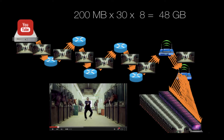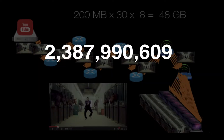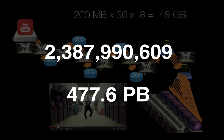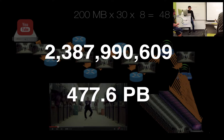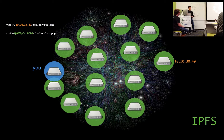For a video like Gangnam Style, which has over 2 billion views, that gets very costly — it comes out to roughly almost 500 petabytes of data being transmitted. And just think about it: if we were all in this room and some people had the video ready, our computers could just go to them and get that data. There's no reason for us all to query YouTube for the same thing.